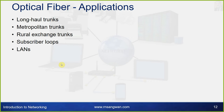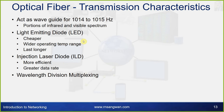Optical fiber applications: geo-fiber is quite popular in metro cities. Uses include long-haul trunks, metropolitan trunks, rural exchange trunks, subscriber loops, and LANs. Transmission characteristics: acts as a waveguide for 10^14 to 10^15 Hz portions of the infrared and visible spectrum. Light-emitting diodes (LEDs) are cheaper with wider operating temperature range and last longer. Injection laser diodes (ILD) are more efficient with greater data rates. Wavelength division multiplexing is also used with optical fiber.